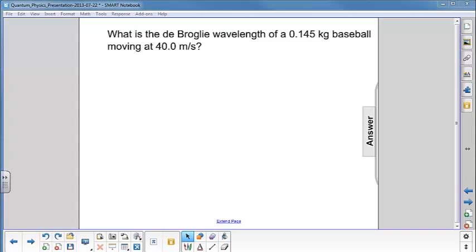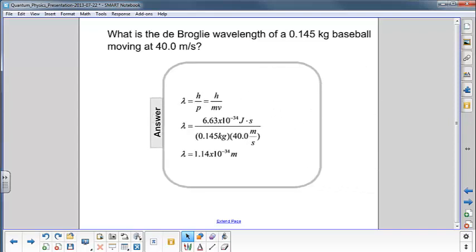What is the de Broglie wavelength of a 0.145 kilogram baseball moving at 40.0 meters per second? We use the equation where the de Broglie wavelength is Planck's constant over momentum.